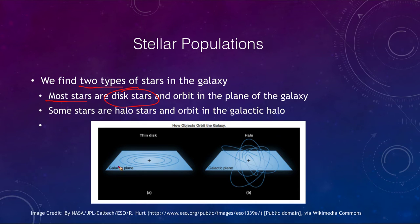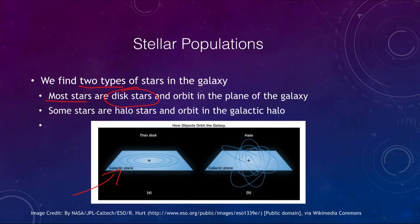Disk stars orbit in roughly circular orbits that go around the center of our galaxy in a flat plane. Much as the planets orbit around the Sun in essentially a flat plane, so do the stars in the galaxy. And those are what we call the disk stars.